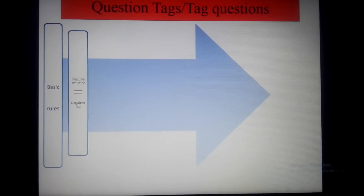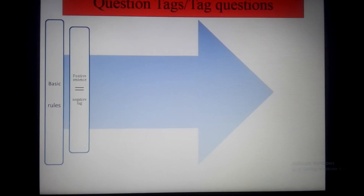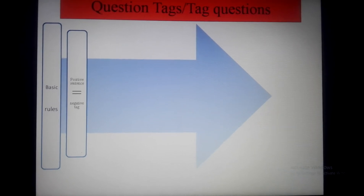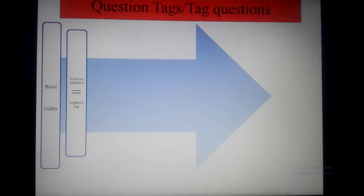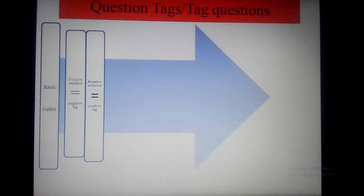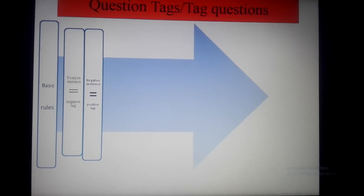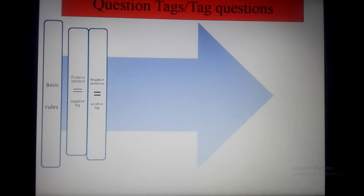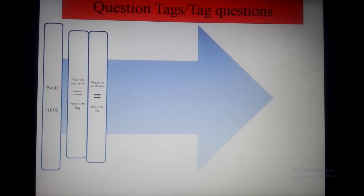The first point: if the sentence is positive, it means a positive sentence equals a negative tag. Keep in mind, if the sentence is positive, the question tag must be negative. The next point: if the sentence is negative, then the tag will be positive. So positive sentence equals negative tag, and negative sentence equals positive tag.